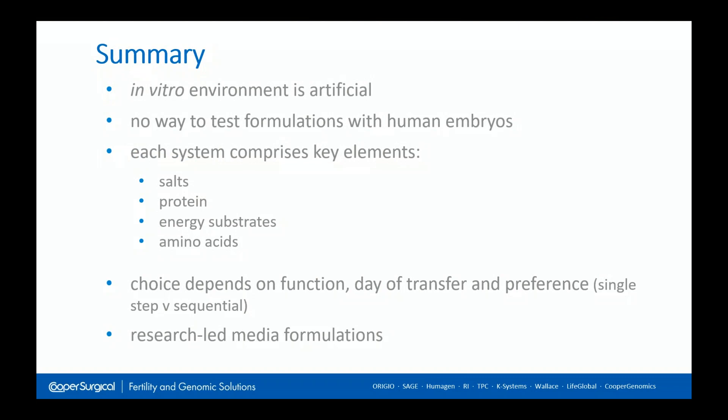To summarise: our in vitro environment is artificial — there's no way to test formulations with human embryos, so we have to derive compositions from as much of the data as we can, and use that as best evidence to come up with our formulations. I've talked about the key elements of culture media in terms of salts, protein, energy substrates, and amino acids. Your choice of culture media will depend on how you're using it, what you're using it for, when you want to transfer embryos, and whether you have a fundamental preference for sequential or single step. The important thing is that we give you research-led media formulations that, with support, we can optimise and give the best possible outcomes for patients.